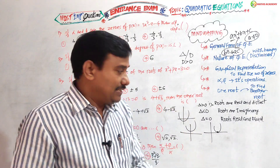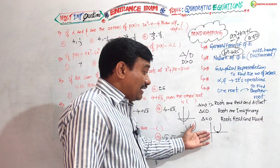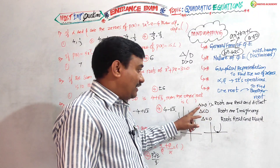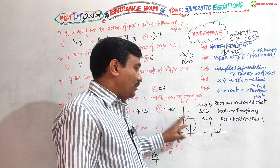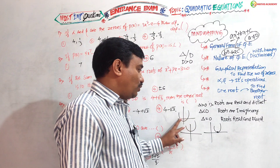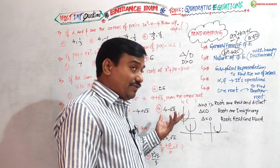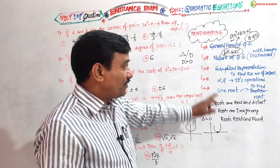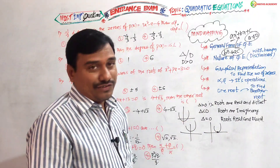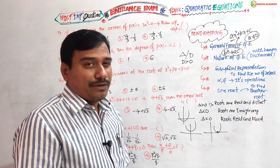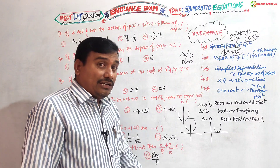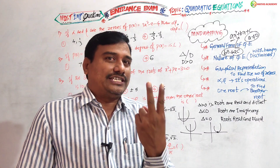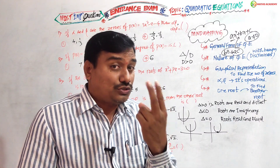Delta greater than zero — this curve will cut the x-axis at two places. Delta less than zero — it will not intersect. Delta equal to zero — it will intersect at one place only. That is the graphical representation to find the number of zeros. Every quadratic equation has at most two zeros.